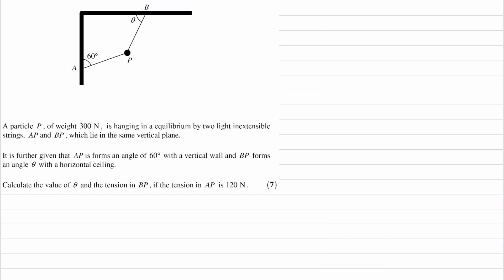We have a particle P of weight 300 N, so I'm going to draw that on the diagram. That goes downwards, and it's hanging in equilibrium by two light, inextensible strings which lie in the same vertical plane.